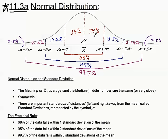There's 68% evenly split in the middle. There's another 27% to get up to 95%, so we cut that in half. And then the other 4.7% to get to 99.7%, we cut that in half as well.